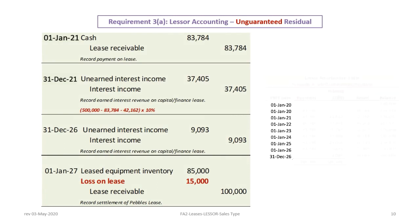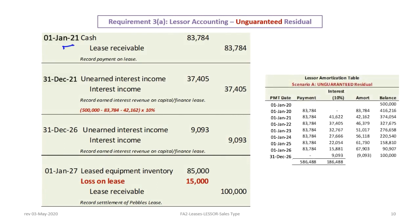Proceeding to 2021: on January 1st, the company receives cash from the lessee, so it debits cash and credits the lease receivable for the amount of the payment, $83,784. Then at the end of the year, the company records another year's worth of interest income: debit unearned interest revenue, credit interest income for $37,405. That's calculated as the balance after the second payment — specifically the $500,000 minus the amortization of the initial payment, with the difference between the second payment and interest of $42,162, times 10% equaling $37,405.